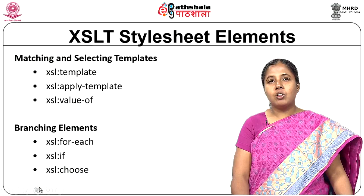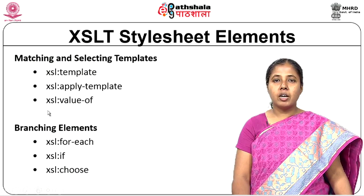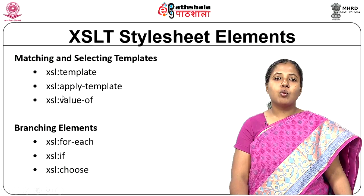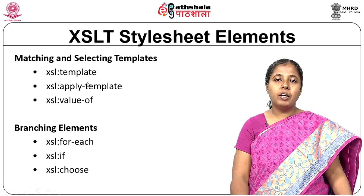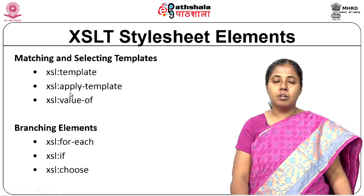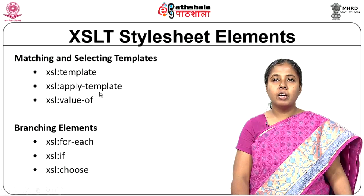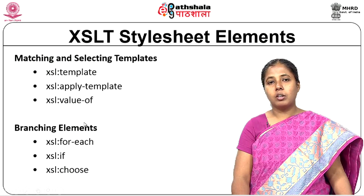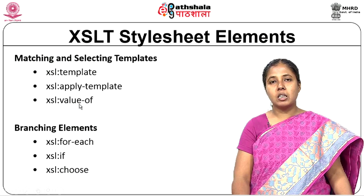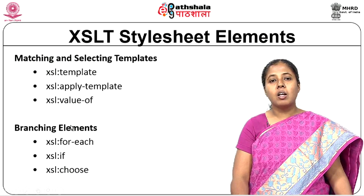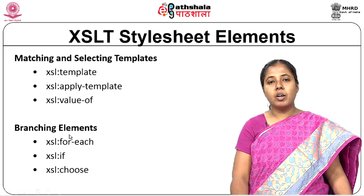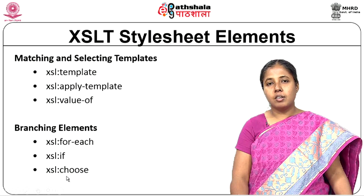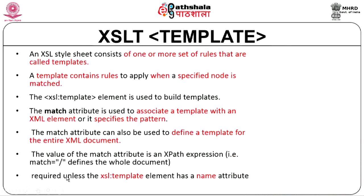Coming to the different style sheet elements, we have matching and selecting elements. We have elements like template, apply-template, value-of, call-template, and different matching and selecting templates. There are branching elements like for-each, if, choose, and others. Let us see them one by one.